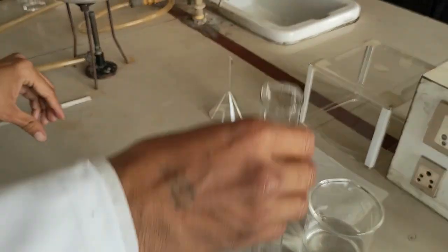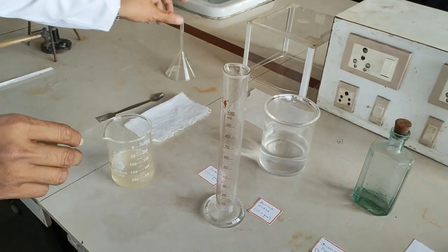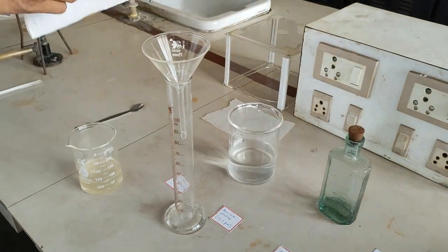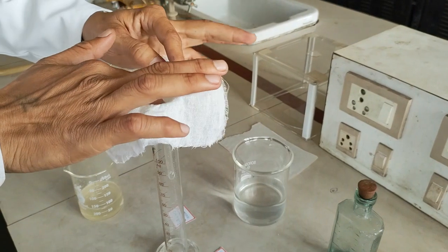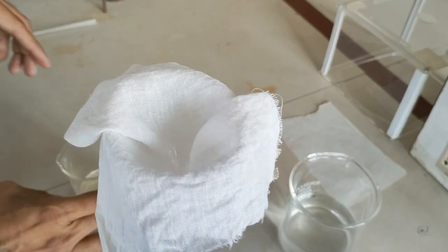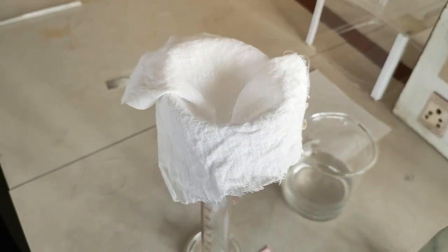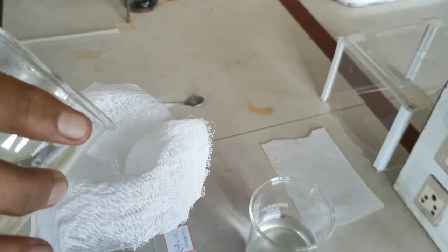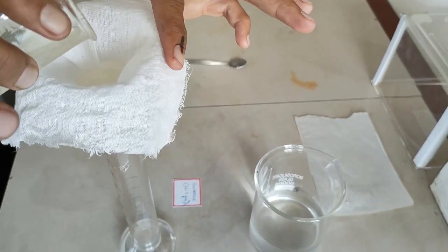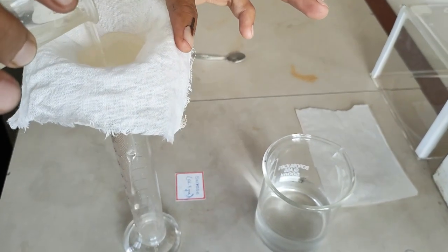For this, we are going to take one measuring cylinder and funnel, and place the muslin cloth over it properly. Now we are going to pour our solution into it slowly.